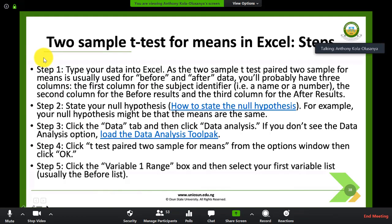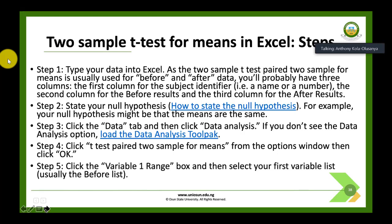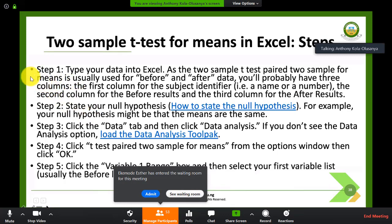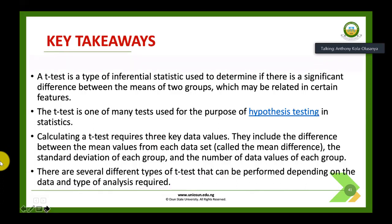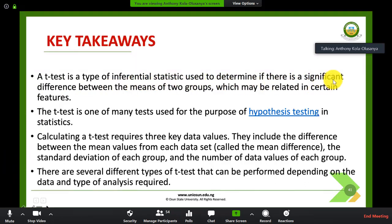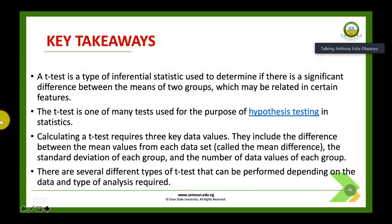Excel is like an old DKW car my father had in the 1950s — you crank it and you can't go beyond 10 kilometers per hour. You cannot rely on Excel anymore; the world is moving away from it. Our takeaways: the t-test is a type of inferential statistics used to determine if there is a significant difference between the means of two groups. The t-test is one of many tests used for hypothesis testing in statistics.